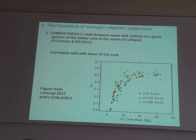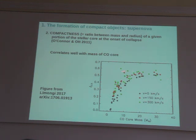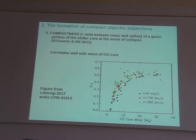Recent work by Limongi has shown that the compactness has a strong correlation with the carbon-oxygen core mass. This plot shows the compactness as a function of the carbon-oxygen core mass for some massive star models. The colors of the points indicate different rotation velocities of the star, but what matters is that there is quite a strong correlation between Xi and the carbon-oxygen core mass. So in the end, even the carbon-oxygen core mass may not be a bad predictor of whether a star will end up as a black hole.